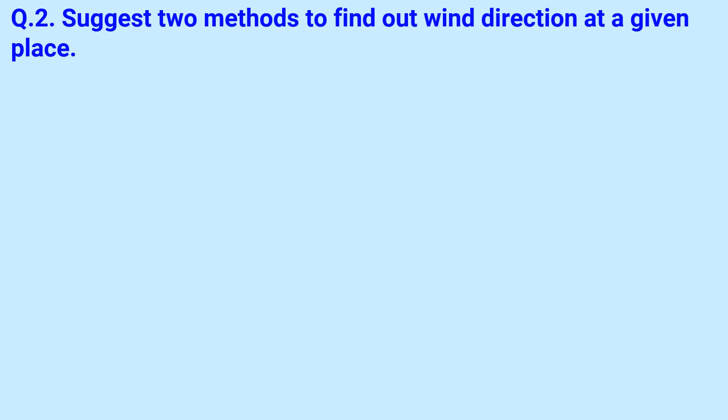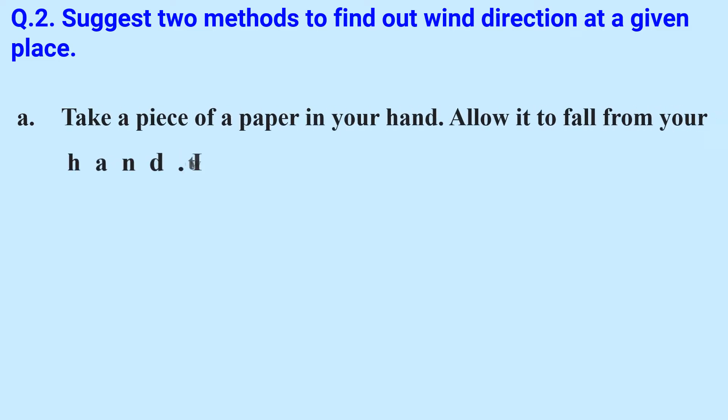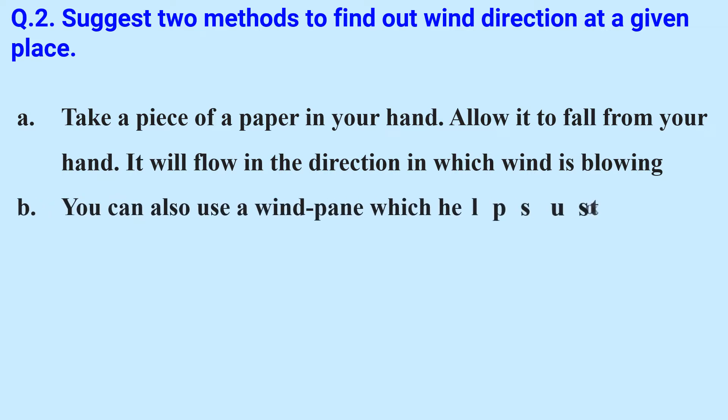Suggest two methods to find out wind direction at a given place. Take a piece of paper in your hand, allow it to fall from your hand. It will flow in the direction in which wind is blowing. You can also use a wind vane which helps us to know the accurate wind direction.